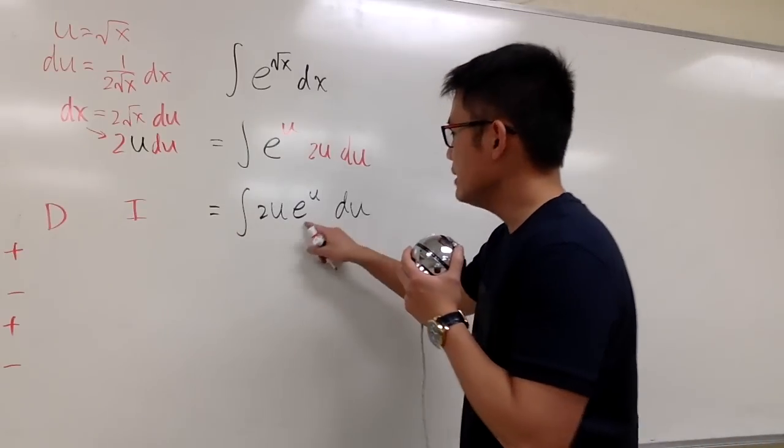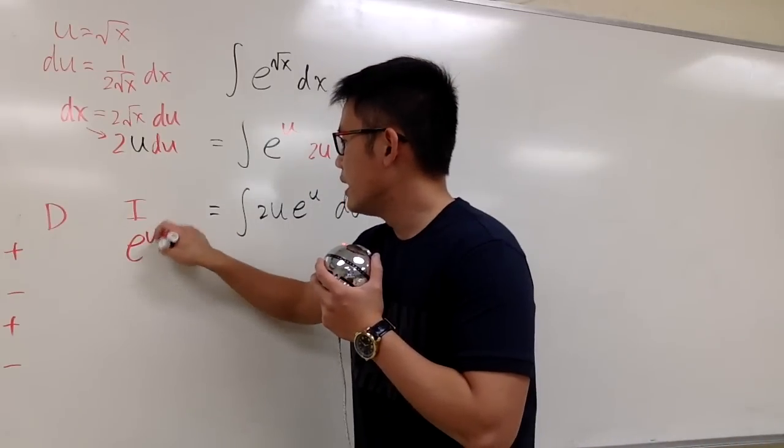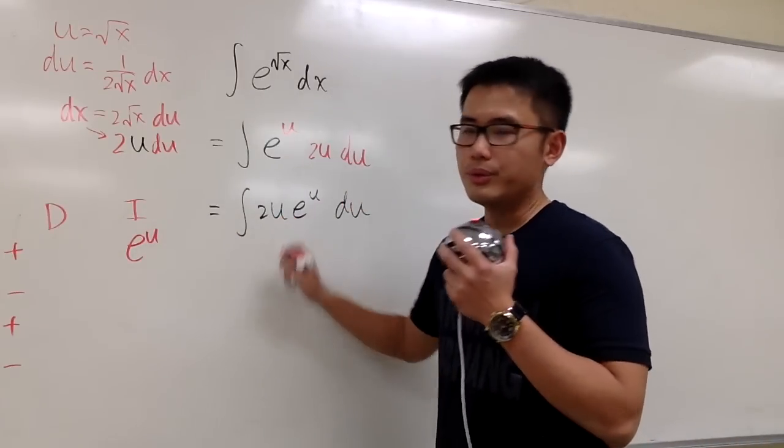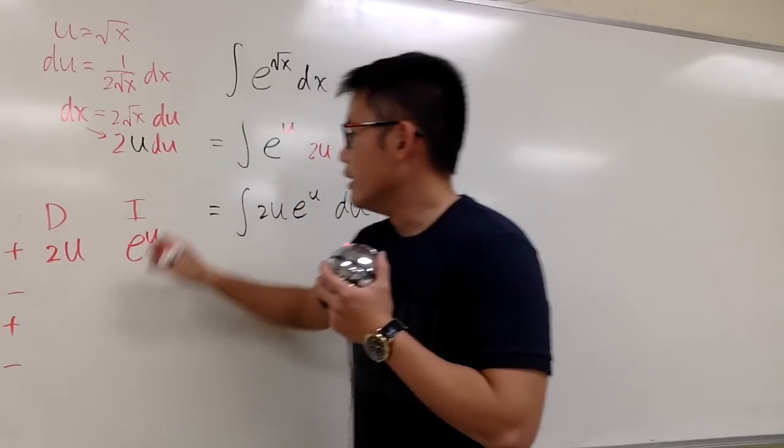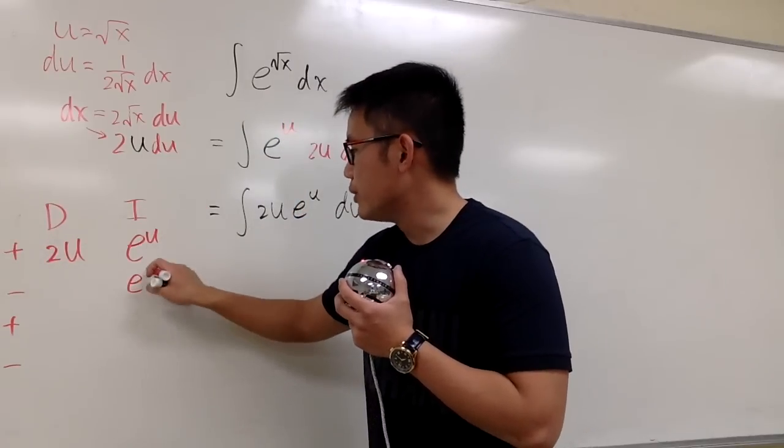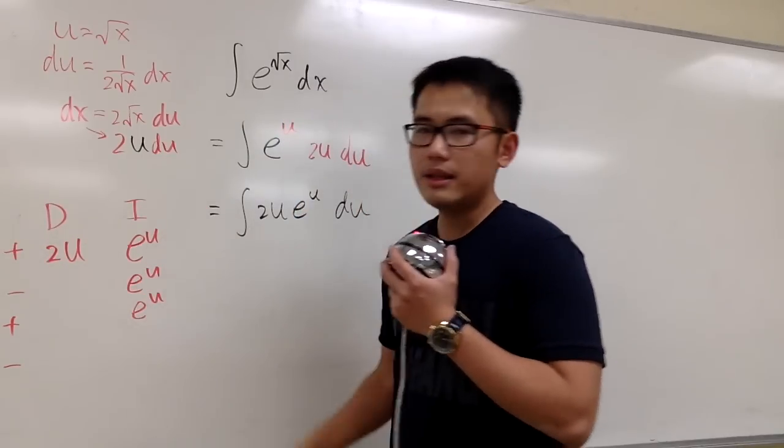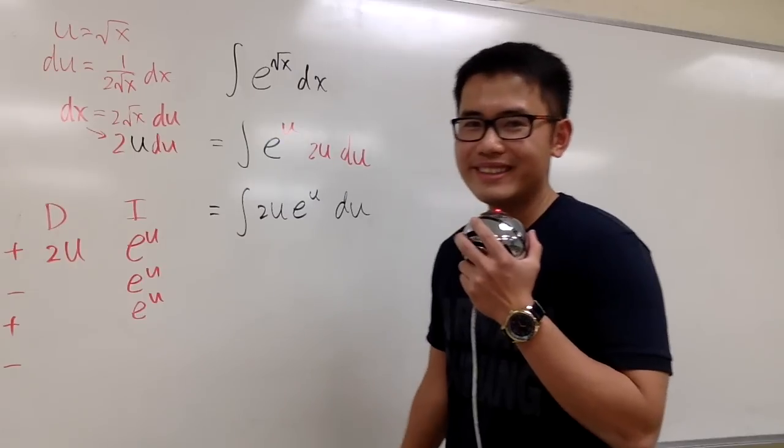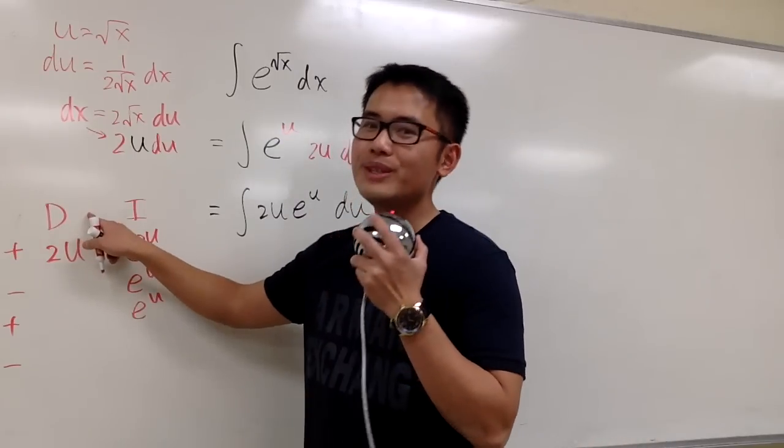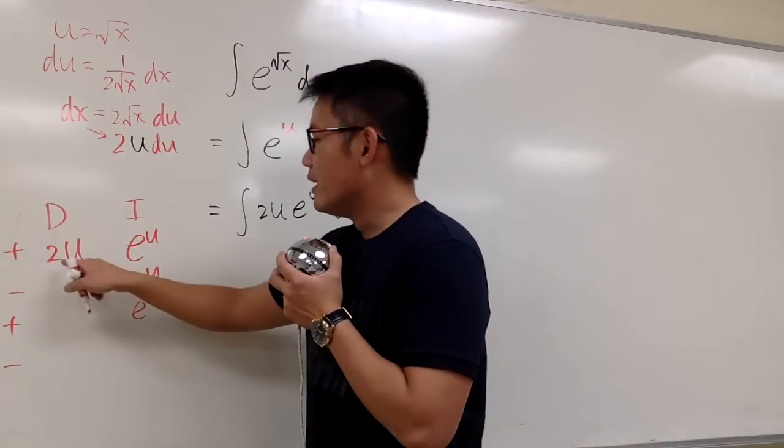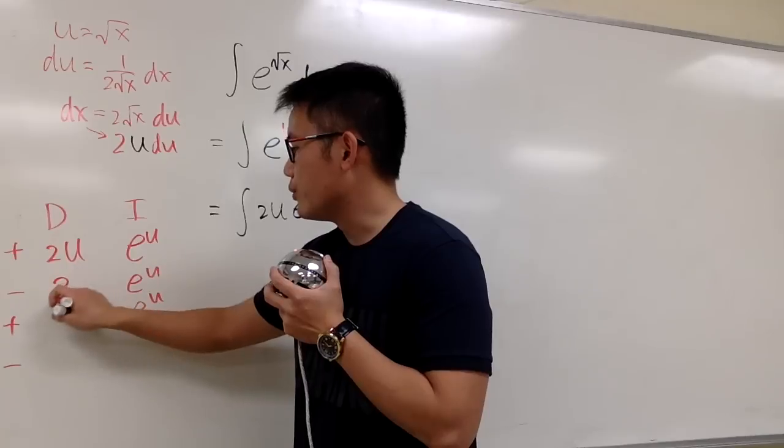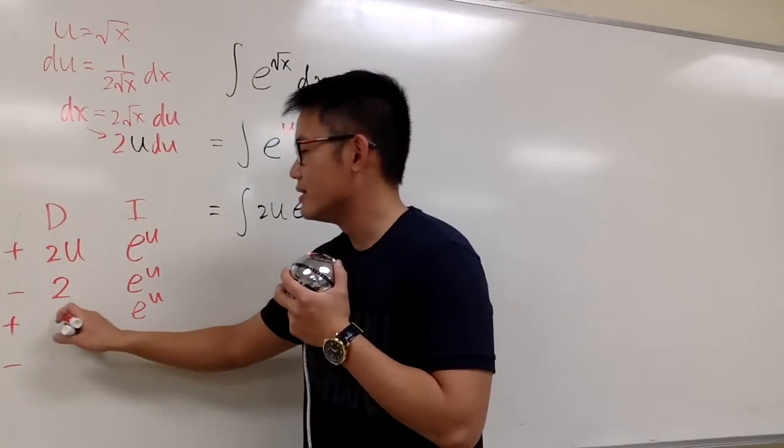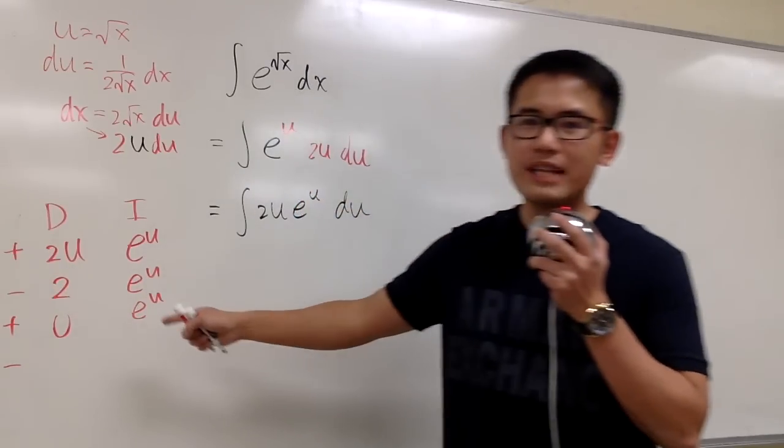I'm going to integrate e to the u. I'm going to differentiate 2u. Integrating e to the u is just e to the u, e to the u. Right? And then you can keep on going forever if you would like. But then, I'm going to move to the differentiation column. The derivative of 2u is just 2, and the derivative of 2 is 0.